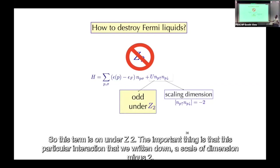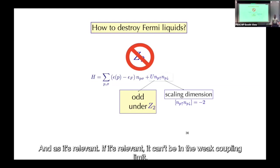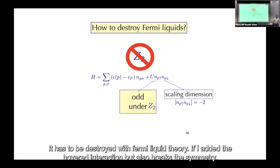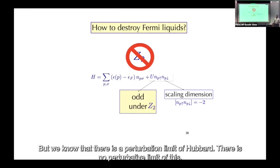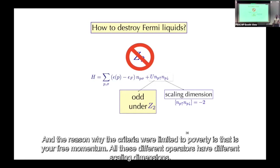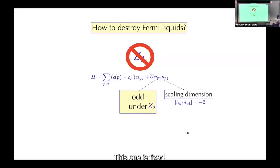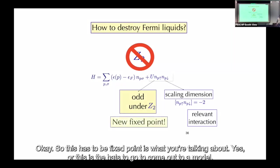This particular interaction has scaling dimension minus two and is therefore relevant. If it's relevant it can't be in the weak coupling limit — it must destroy Fermi liquid theory. Adding the Hubbard interaction also breaks the symmetry. We know there's a perturbative limit of Hubbard but not of this interaction, because Hubbard has three-momentum conservation while this term has a fixed scaling dimension. This has to be a new fixed point — this is the Hatsugai-Komoto model.